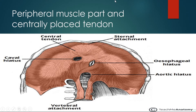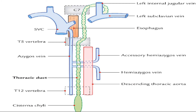Now let's look at the openings of the diaphragm. The diaphragm has an esophageal hiatus, where the right crus splits to give way to the esophagus. There is also the caval hiatus through which the inferior vena cava passes to the abdomen. The aortic hiatus lies anterior to the body of the twelfth thoracic vertebra, between the crura. It transmits the aorta, but also transmits the thoracic duct and the azygos vein — three structures in total.